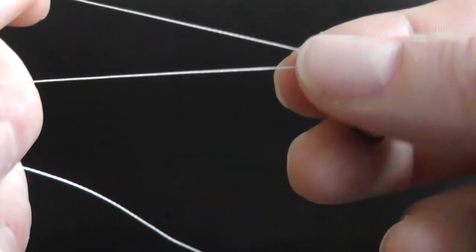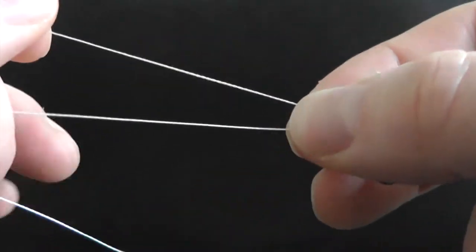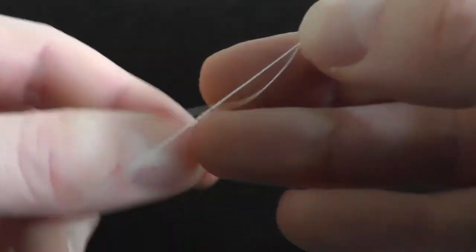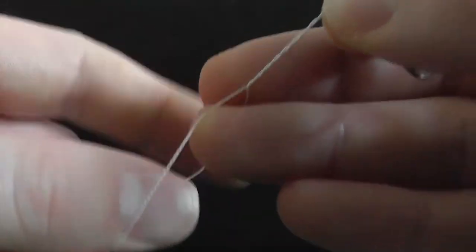So we take hold of the hook just before the eye, being careful not to hook yourself, and then we'll make five turns: one, two, three, four, five.